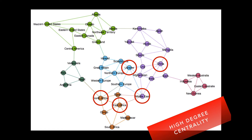Looking back at the Risk board, the nodes with highest degree centrality — there are five tied at degree six: Ukraine, Middle East, China, East Africa, and North Africa. You may try to infect or immunize these nodes because they can infect very many people in one round.